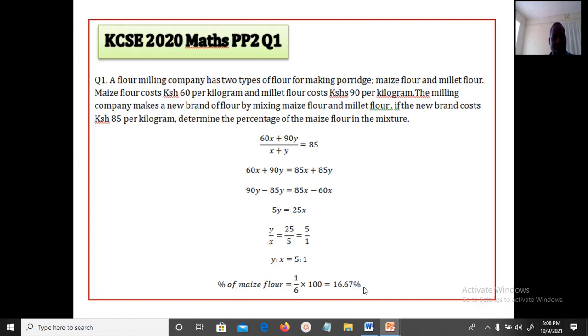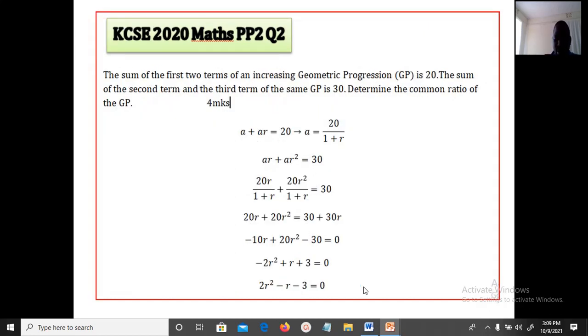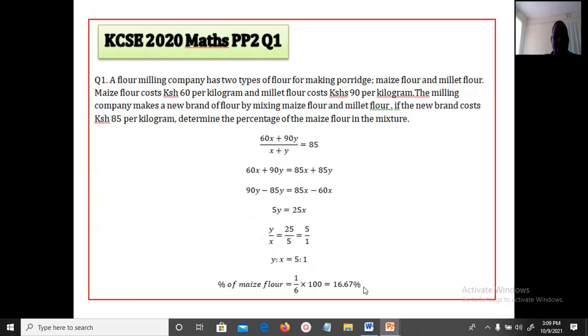Now Question 1: A flour milling company has two types of flour for making porridge: maize flour and millet flour. Maize flour costs 60 shillings per kg and millet flour costs 90 shillings per kg. The milling company makes a new brand of flour by mixing maize flour and millet flour. If the new brand costs 85 shillings per kg, determine the percentage of maize flour in the mixture.